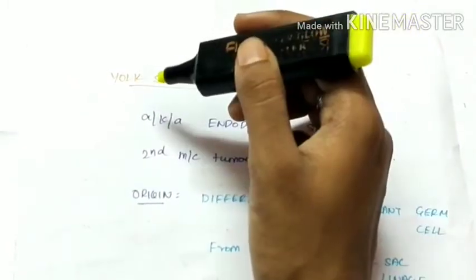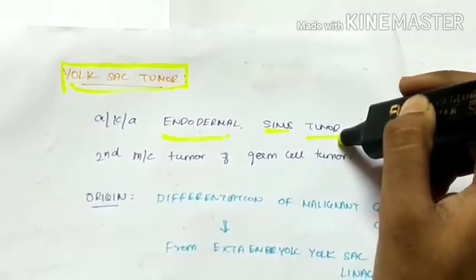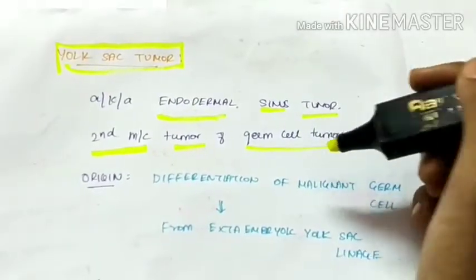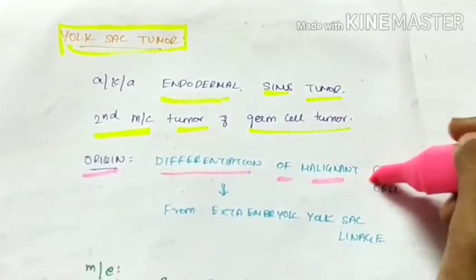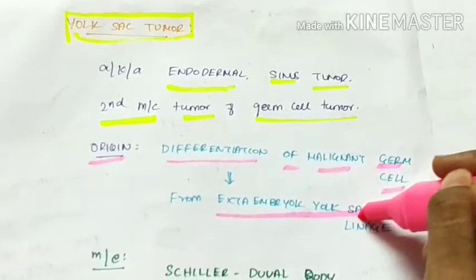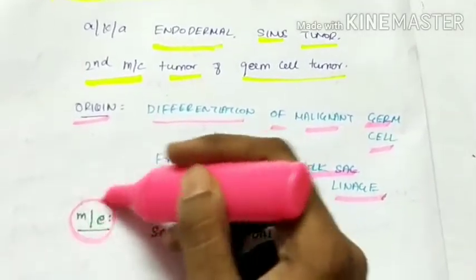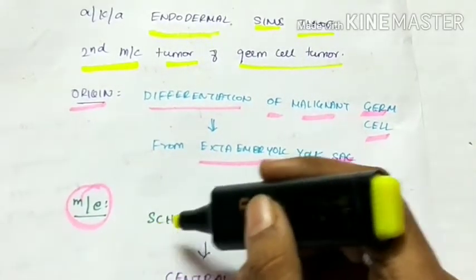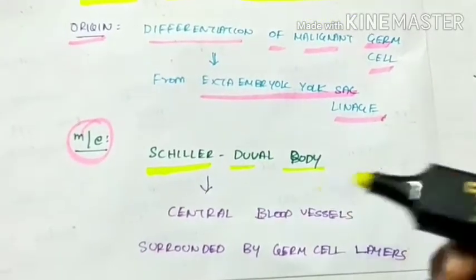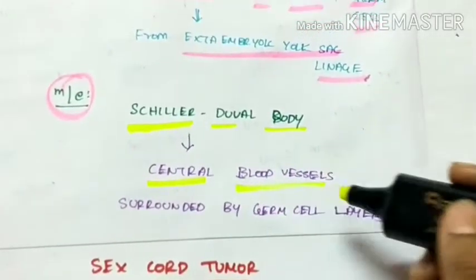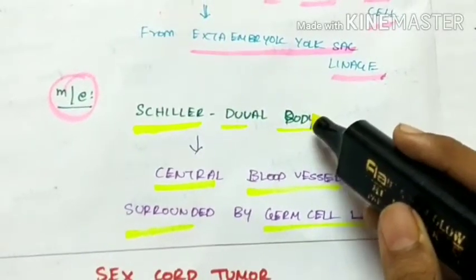The next type of germ cell tumor is the yolk sac tumor, also called as endodermal sinus tumor. This is the second most common tumor of the germ cell tumors. Its origin is from the differentiation of malignant germ cells from the extra-embryonic yolk sac lineage. Microscopically, there is characteristically a structure called the Schiller dual body, which is comprised of central blood vessels surrounded by the germ cell layers. This structure is characteristic to the yolk sac tumor.